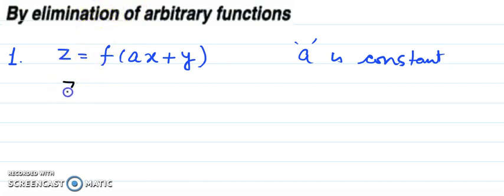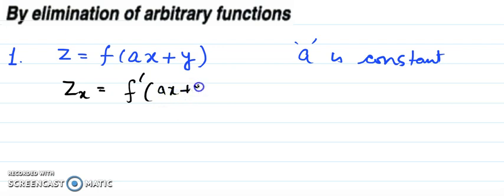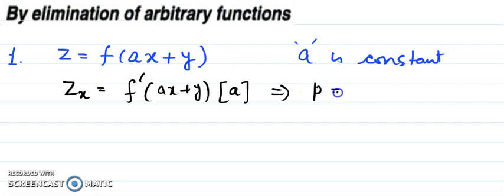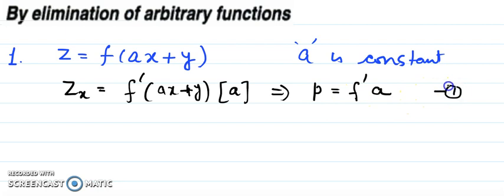The first step is to differentiate with respect to x, since the independent variables are x and y. On the right-hand side, perform ordinary differentiation of the function, then differentiation of (ax + y) with respect to x gives a. We can replace z_x by p, giving us p = f'(ax+y)·a. I'll call this equation number one.